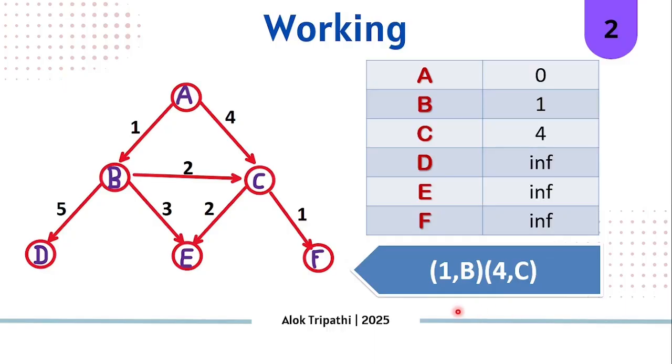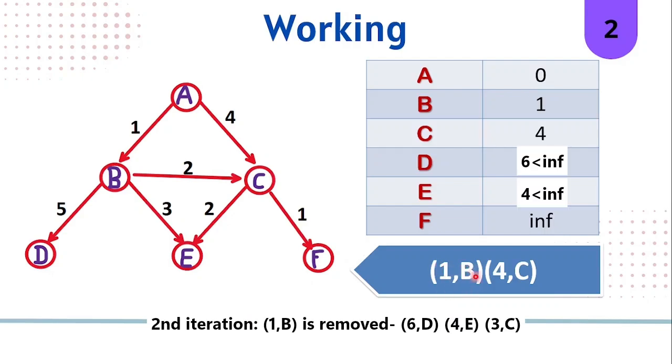In the next iteration, priority will be given to 1B since it has the lowest cumulative path cost. After taking out 1B and exploring it, we'll get 6D, 4E, and 3C.